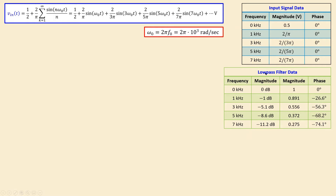We have also determined the low-pass filter data for DC, 1 kHz, 3 kHz, 5 kHz, and 7 kHz — the magnitude in dB and, converting to scalar values, these unitless ratios. The magnitude of the low-pass filter is unitless because it is the ratio of output voltage to input voltage (volts divided by volts). The associated phase values, calculated and determined from the Bode plot, are also recorded.